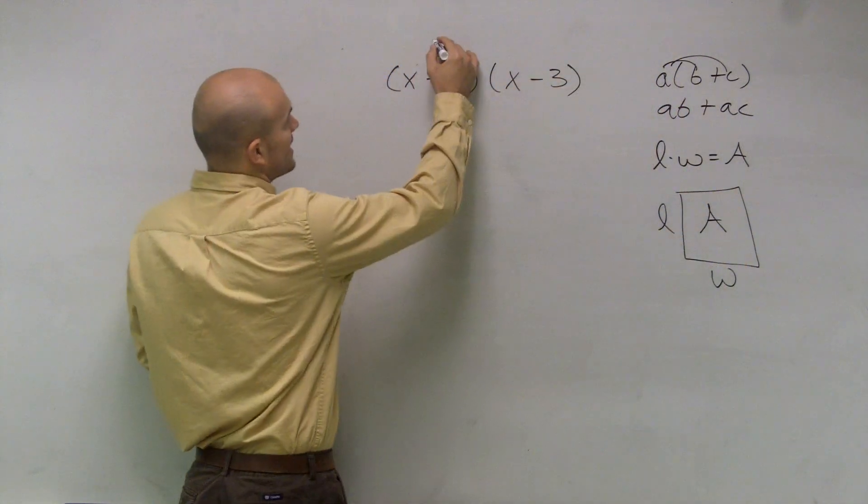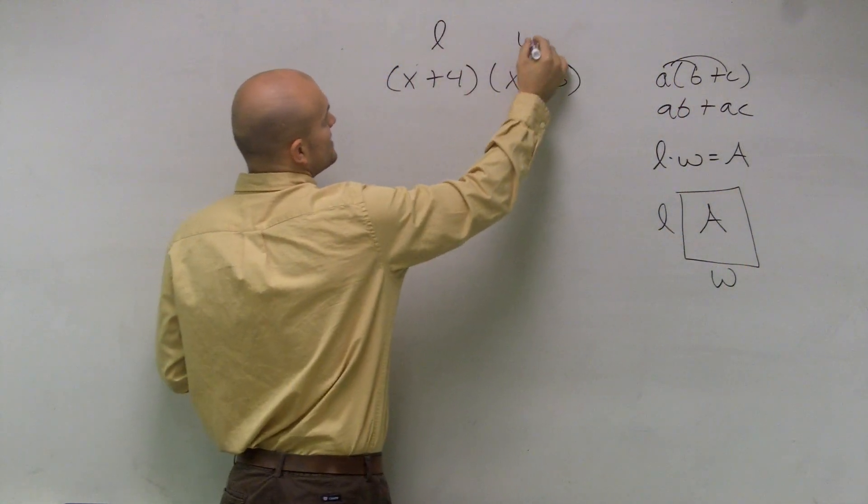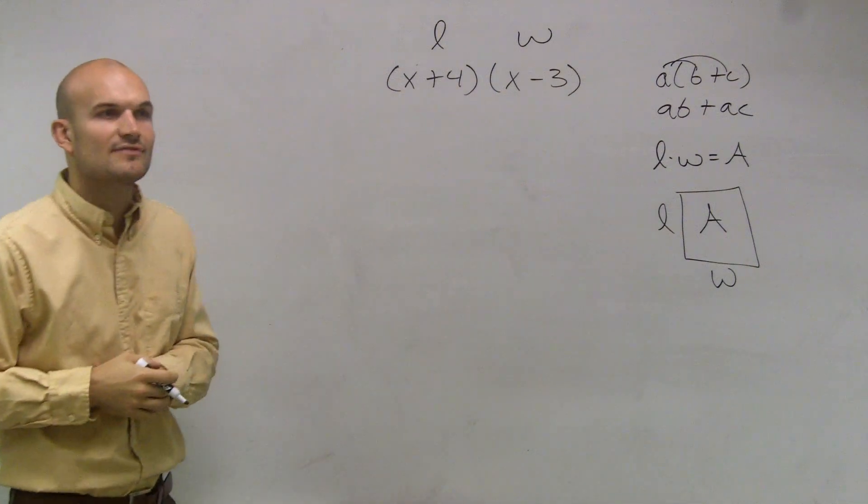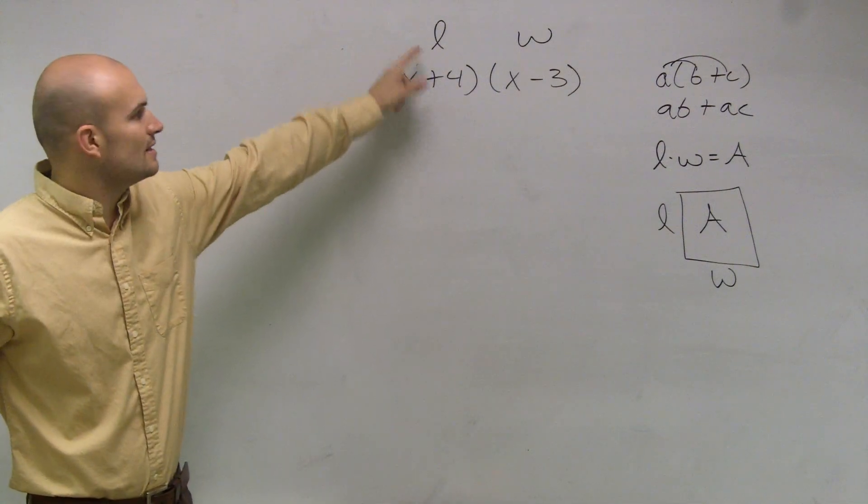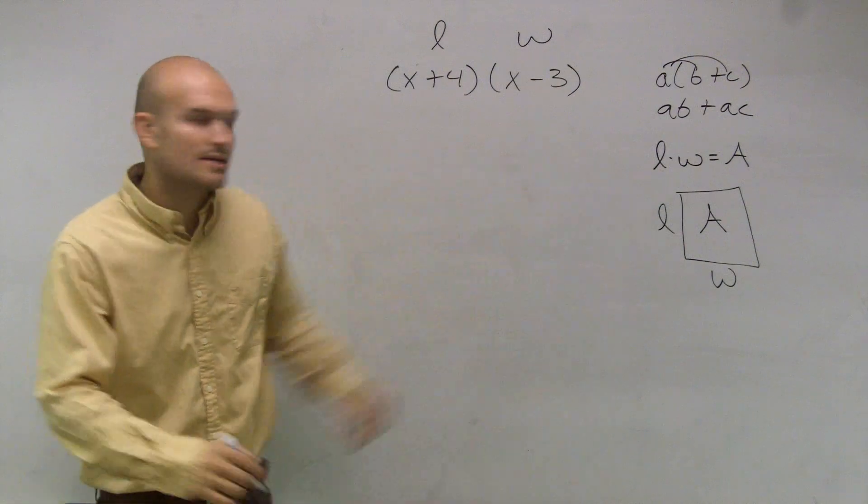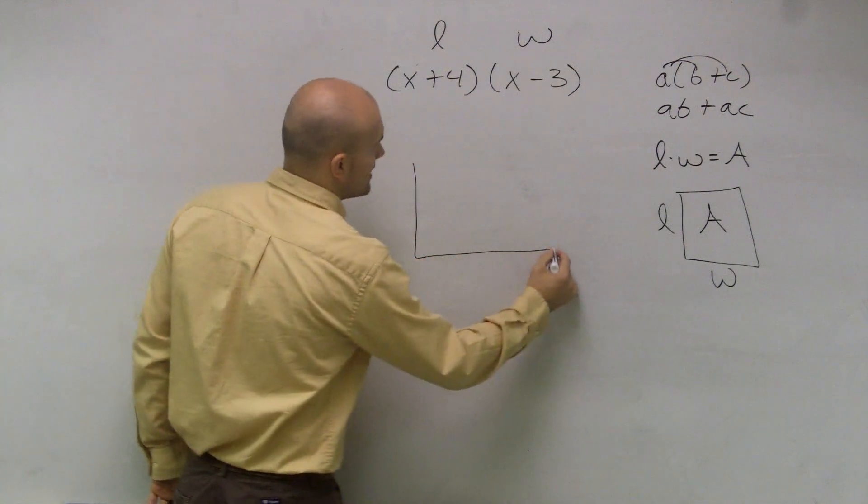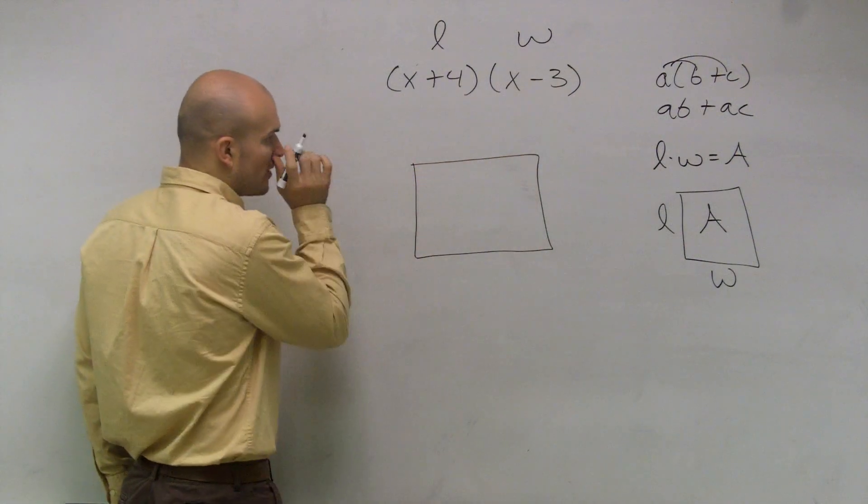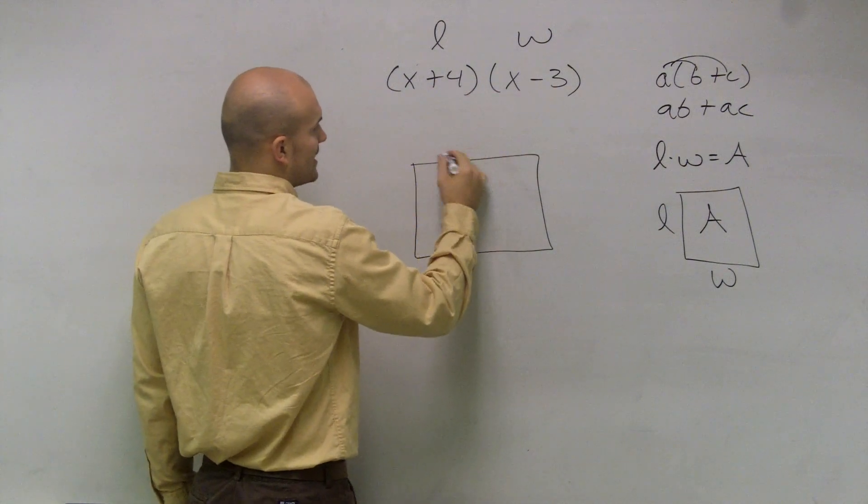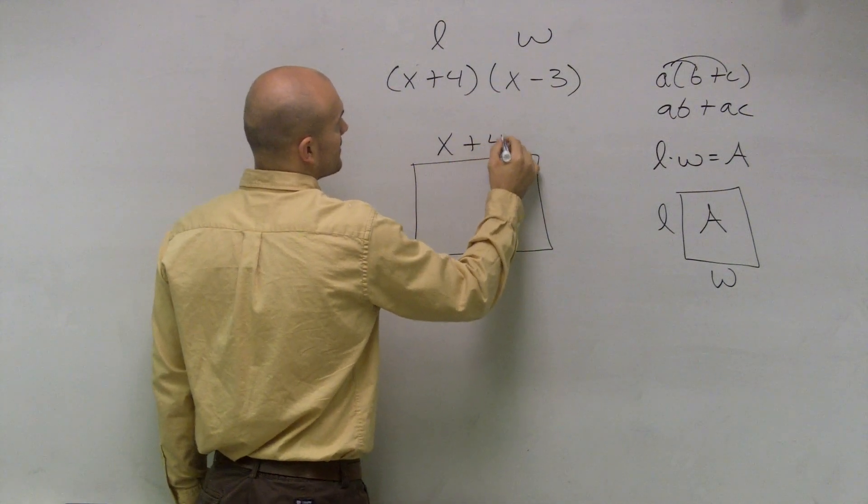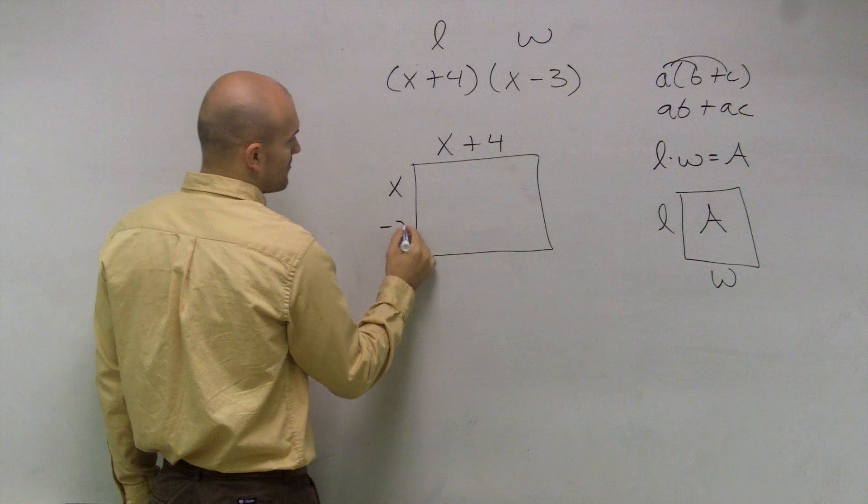So if I was going to look at this, what I can do is, if I'm having difficulties, I can rewrite this as kind of length times width. I can let the length be x plus 4 and the width be x minus 3. So what I'll do is I'm going to create my own rectangle where I'm going to say my length is x plus 4 and my width is x minus 3.